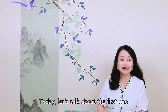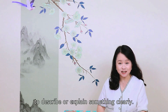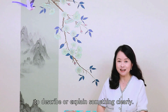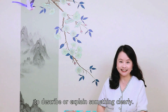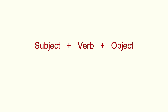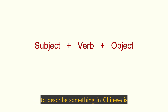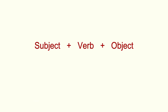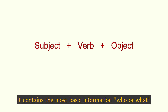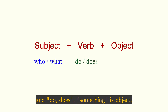Today, let's talk about the first one: how to organize a sentence to describe or explain something clearly. As in English, the word order for the simplest sentence to describe something in Chinese is subject plus verb plus object. It contains the most basic information: who or what, and do or does.